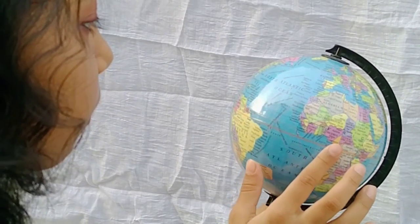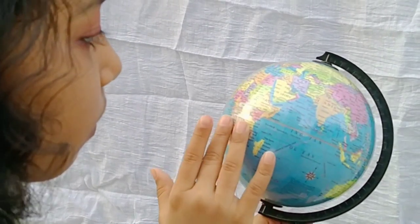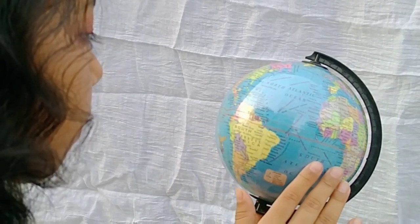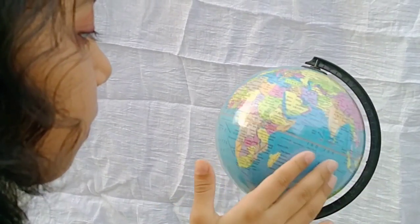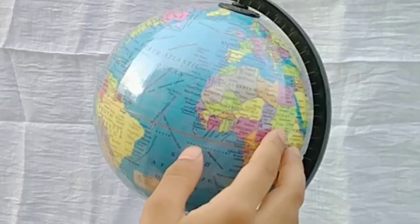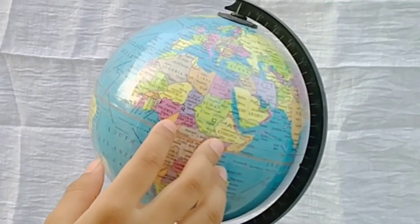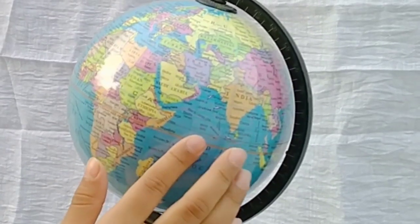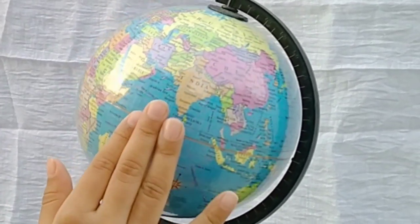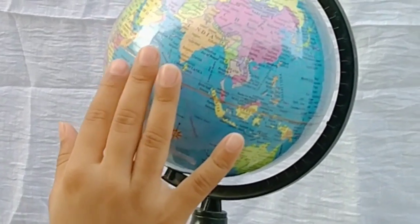Then you can see the continents or large land masses. The continents and oceans depicted on the globe are relatively of the same shape and proportion as they are on the surface of the Earth.